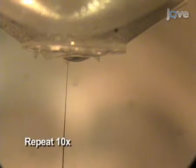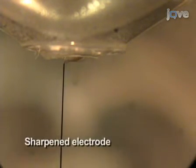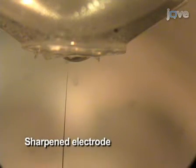Repeat this process 10 times, each time inserting the needle such that 50% of the electrode is in contact with the potassium hydroxide. Once the electrode has been sharpened, it is ready to be used for experiments.